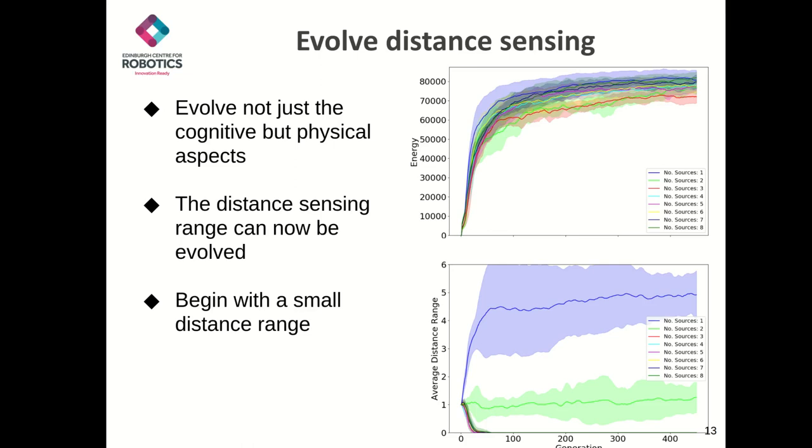With three or more sources, the distance sensing range drops practically to zero, as the swarm prefers to exclusively rely on their communication capability with their fellow agents. In all cases, the swarm performs the best when they are also given the ability to evolve their sensing range. All of this is indicative that the swarm never wants to observe more than one source, as they will get confused and will cause indecisive behavior resulting in sub-optimal performance.